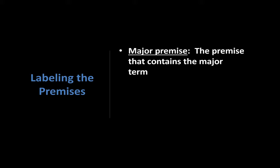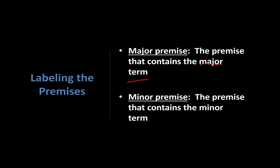Now labeling the premises: the major premise is the premise that contains the major term — that simple. The minor premise is the premise that contains the minor term — that simple.